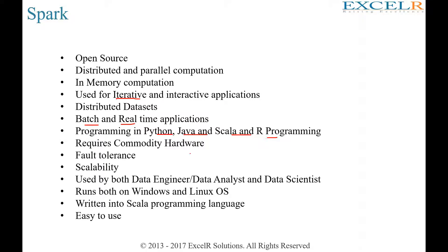Spark supports Python, Scala, Java, and R. Just like Hadoop, Spark can be set up on commodity hardware. The difference is that in Hadoop you focus more on the storage part, whereas for Spark you need more memory because the computation is happening in memory. You can connect multiple systems and start working. It's fault tolerant — there is a concept called RDD through which fault tolerance is achieved. It is scalable, just like plug and play in Hadoop — plug in more systems and increase the nodes.